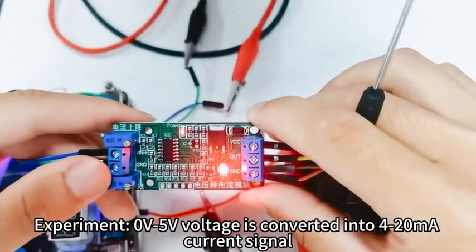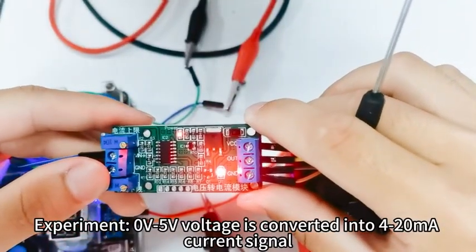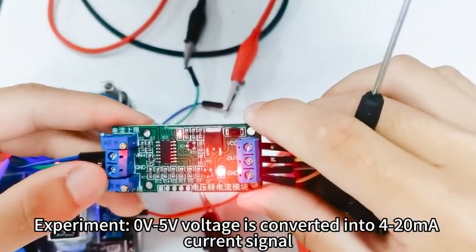The experiment: 0V-5V voltage is converted into a 4-20mA current signal.